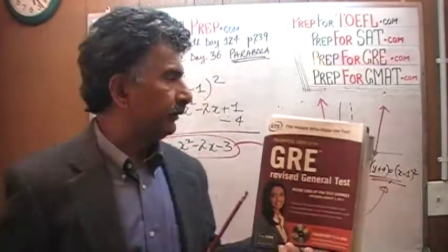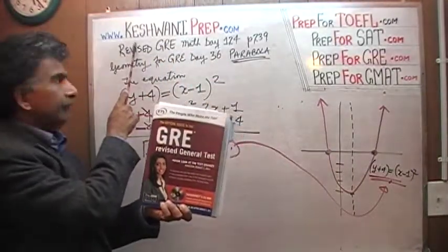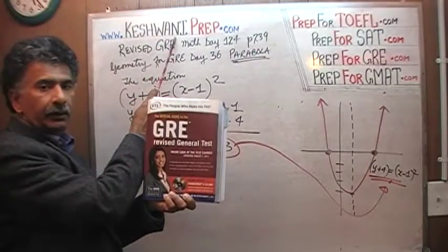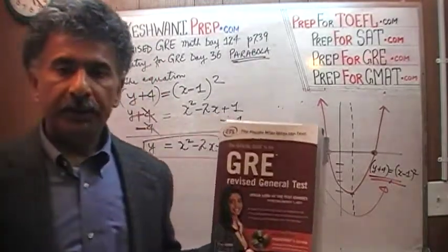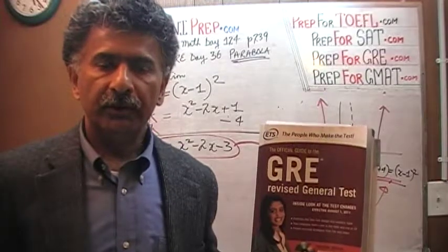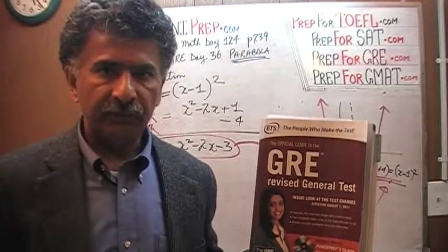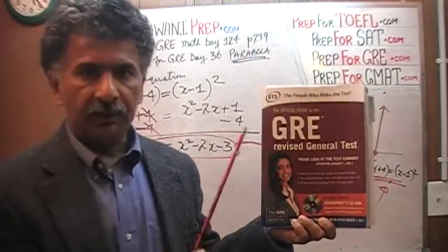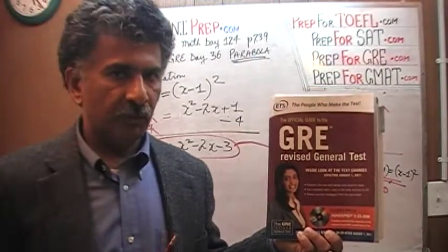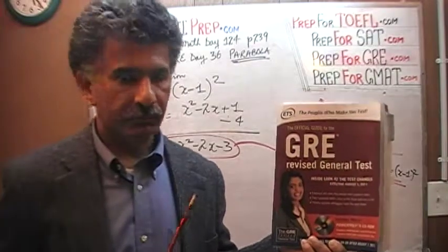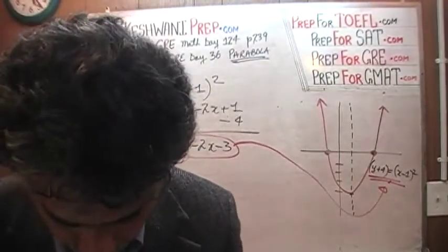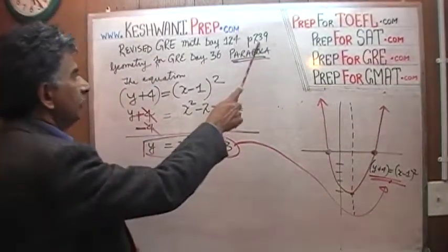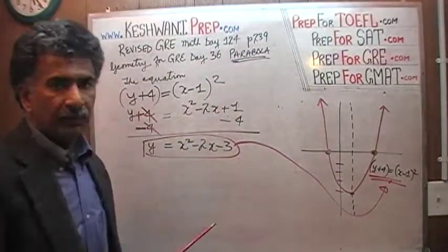Hello, my name is Keshwani. We are here because we want to prepare for the GRE. We have been solving GRE math questions out of this book here, the official guide to the GRE, the revised general test. If you do not own this book already, purchase one immediately — you are going to need it. The problem we are about to solve is on page 239, and today is our lesson number 124.